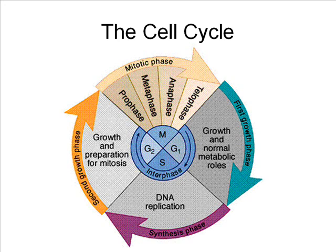Interphase is divided into three stages. During the first stage of interphase, G1, a new cell has just been created. The cell grows and carries out its normal metabolic activities. The second stage of interphase is known as S-phase. During this stage, the DNA of the cell is copied or replicated, and the cell begins to prepare for division.